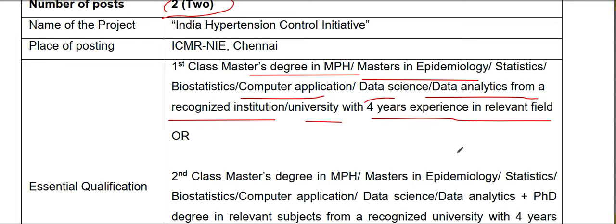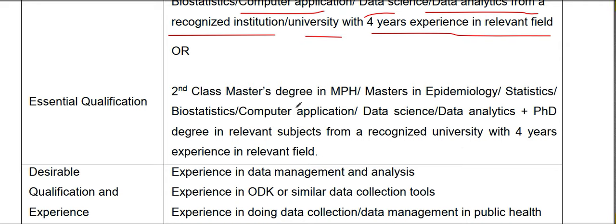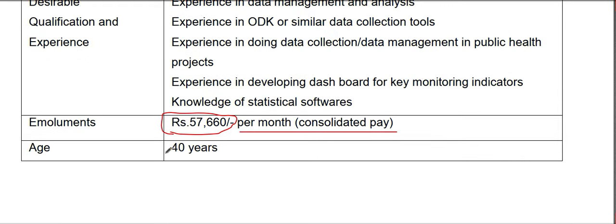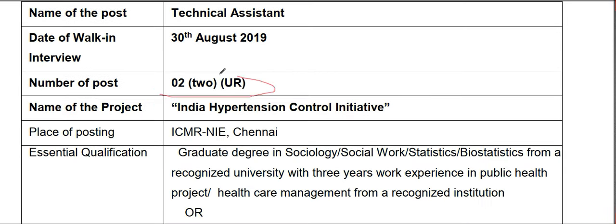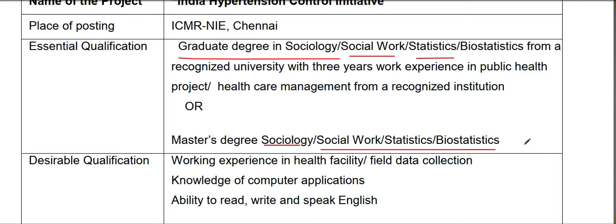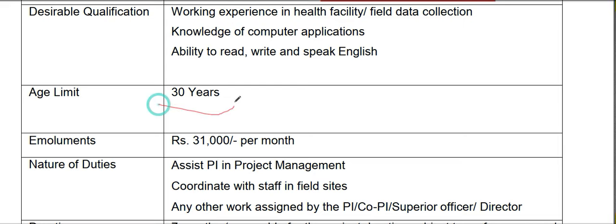At least 5 years of experience in a relevant field is required. A second class Master Degree in MPH, Master in Epidemiology, Statistics and Computer Science, Data Science, or Data Analysis is needed, plus a PhD degree in relevant subjects including lean and math, academic evaluation, data analysis, technology, and psychology. Date: 30th August 2019. A graduate degree in Sociology, Social Work, Statistics, and Biostatistics or a Master Degree in those fields is also accepted. Age limit is 30th to 31st year of 2021.